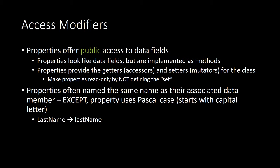Access modifiers tell you what can get to something and what can't. Properties offer public access to data fields — without public access, you won't be able to get to them when needed. Properties look like data fields but are implemented as methods. They provide getters (accessors) and setters (mutators) for the class, and can be made read-only by not defining the set. Properties are often named the same as their associated data member, except properties use Pascal case, meaning they start with a capital letter.